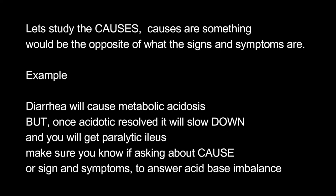Let's study the causes. Causes are something that would be the opposite of what the signs and symptoms are. Example: diarrhea will cause metabolic acidosis, but once the acidosis is resolved it will slow down and you will get paralytic ileus. Make sure you know if the question is asking about the cause or the signs and symptoms to answer the acid base imbalance.